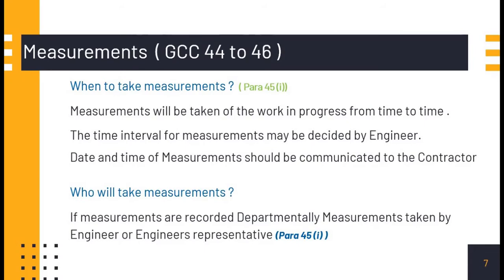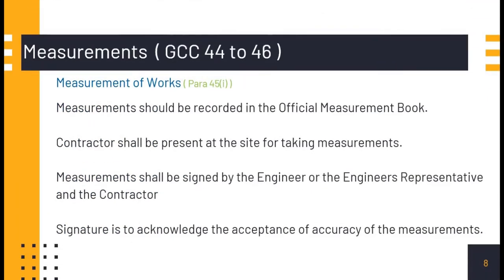The first question is: when to take measurements? Measurements will be taken of the work in progress from time to time. The time interval for measurements may be decided by the engineer. Date and time of measurements should be communicated to the contractor. Who will take measurements? If measurements are recorded departmentally, they are taken by the engineer or engineer's representative. Measurements should be recorded in the official measurement book. The contractor shall be present at site, and measurements shall be signed by the engineer or engineer's representative and the contractor to acknowledge acceptance of accuracy.